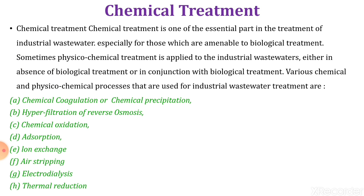Chemical treatment is one of the essential parts in the treatment of industrial wastewater, especially for those which are not amenable to biological treatment. Sometimes physico-chemical treatment is applied to industrial wastewater, meaning partly or in the first phase the physical separation is carried out and then chemical treatment is provided, either in the absence of biological treatment or in conjunction with biological treatment.